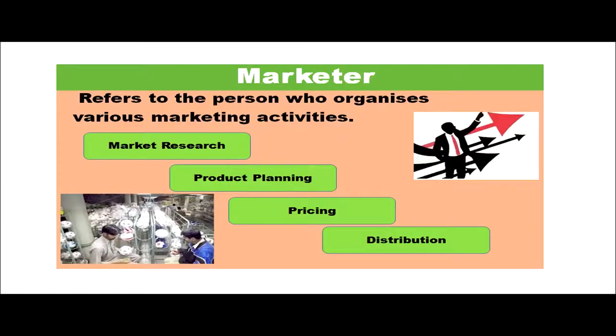The next term is marketeer. It refers to the person who organizes various marketing activities like market research, product planning, pricing, and distribution. The person who conceives what to produce through marketing research, plans the product, prices it, and is involved in its distribution to consumers is called the marketer.